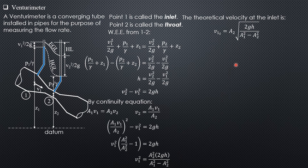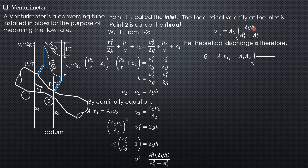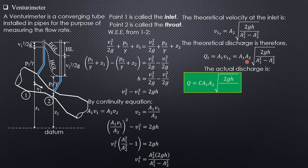The theoretical discharge is Q = A₁ × theoretical V₁, which equals A₁A₂√(2gh) / √(A₁² − A₂²). Note that h is the difference in velocity heads of the throat and the inlet. The actual discharge is obtained by introducing a meter coefficient C (less than 1), giving Q_actual = C · A₁A₂√(2gh) / √(A₁² − A₂²).